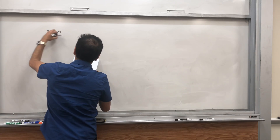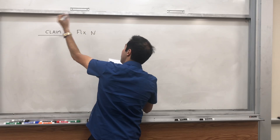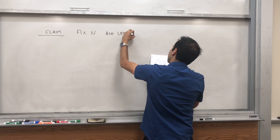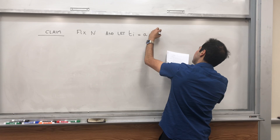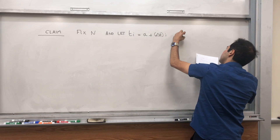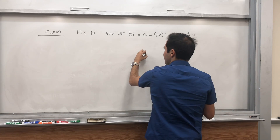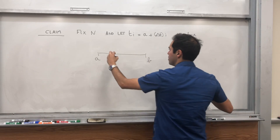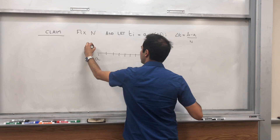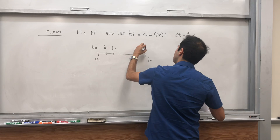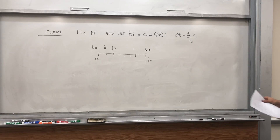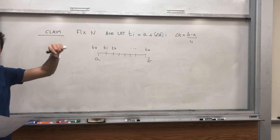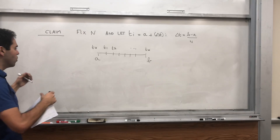So just like Riemann integration, fix n, a very big number, and subdivide your interval [a, b] into n little pieces. Let t_i just be the time a plus i·Δt, where Δt is (b minus a) over n. So in terms of pictures, you have this fixed interval from a to b, subdivided into n pieces: t_0, t_1, t_2, ..., up to t_n — just like Riemann integration. And we're claiming that if you take little steps in W, square them, and sum them up, it actually goes to what you expect.